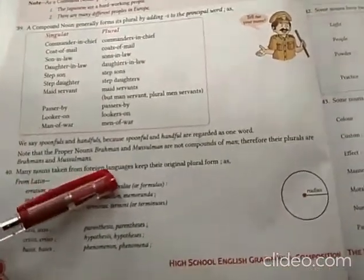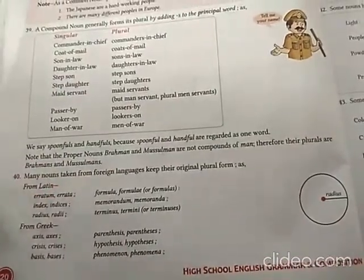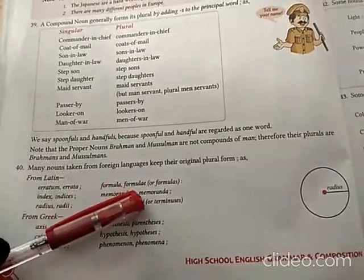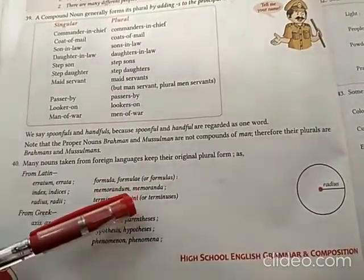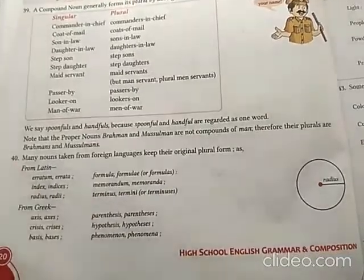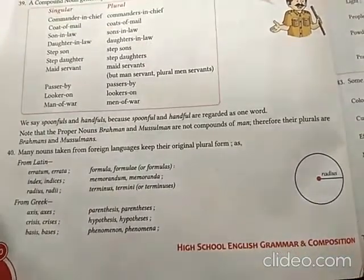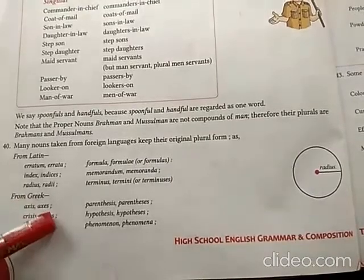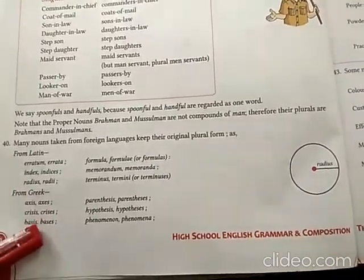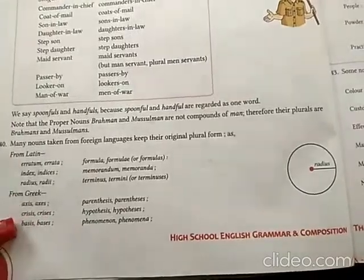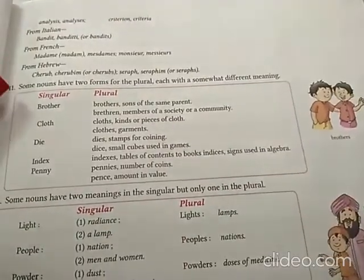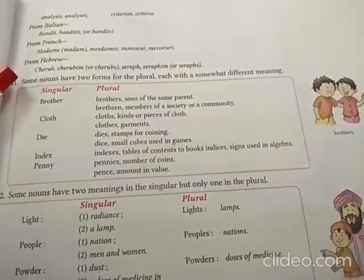Many nouns taken from foreign languages keep their original plural form. For example, erratum becomes errata, formula becomes formulae or formulas, and radius becomes radii. From Greek, axis becomes axes, crisis becomes crises, and basis becomes bases. Similar patterns exist in Italian, French, and Hebrew languages.